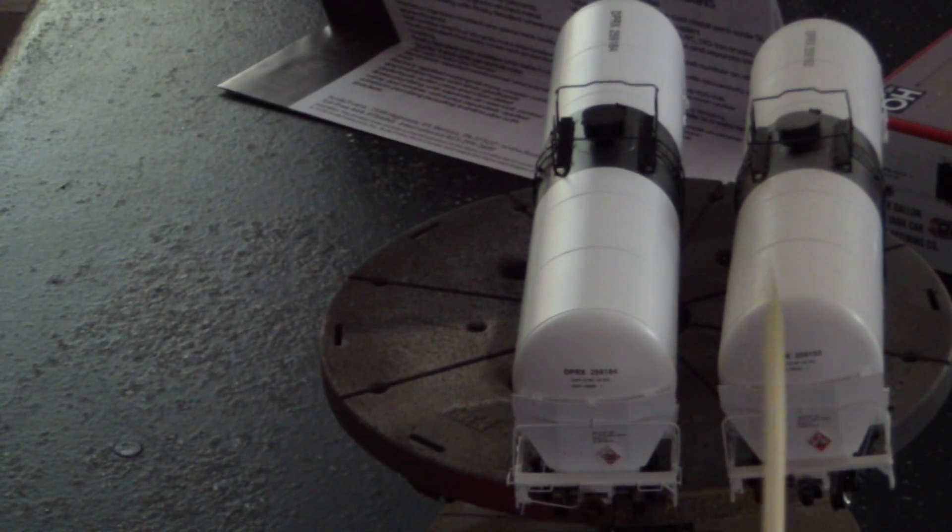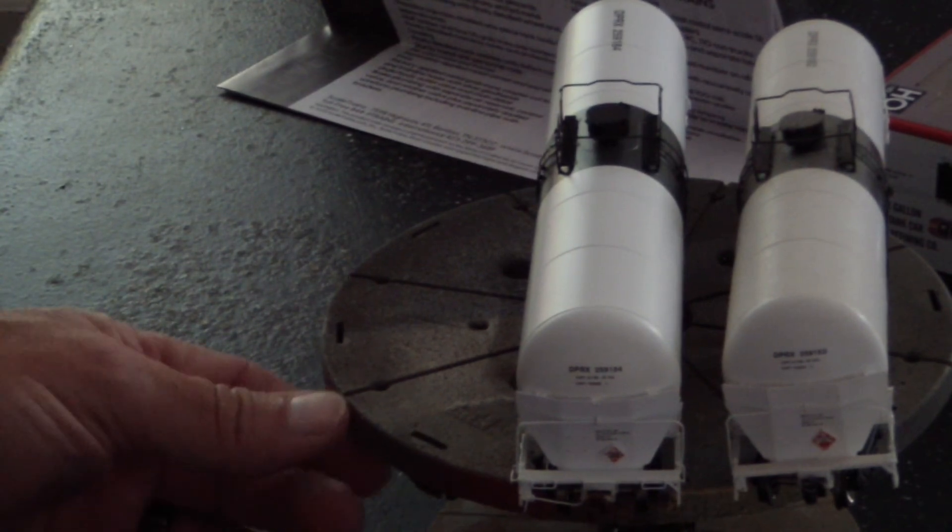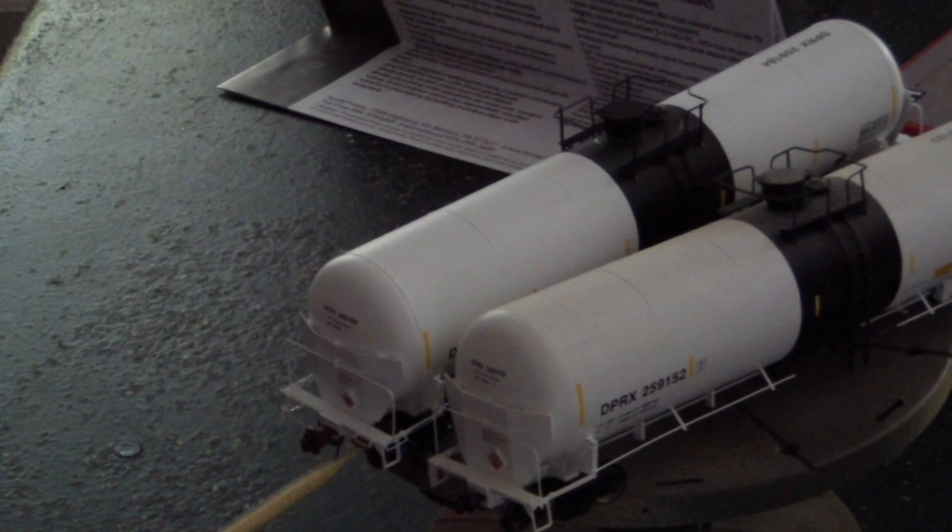This one here is the Operator and this one is the Rivet Counter. As you can see, pretty much we have the same. We have our markings here and here, we have our placards. Okay, this one has the see-through walkway just like on the Rivet Counter, but as you notice as I turn it, we'll stop it right here. Here on the Rivet Counter we have the grab irons, we have a coupler cut lever. On the Rivet Counter we do not have that. We do not have the grab iron for coming up on the step.